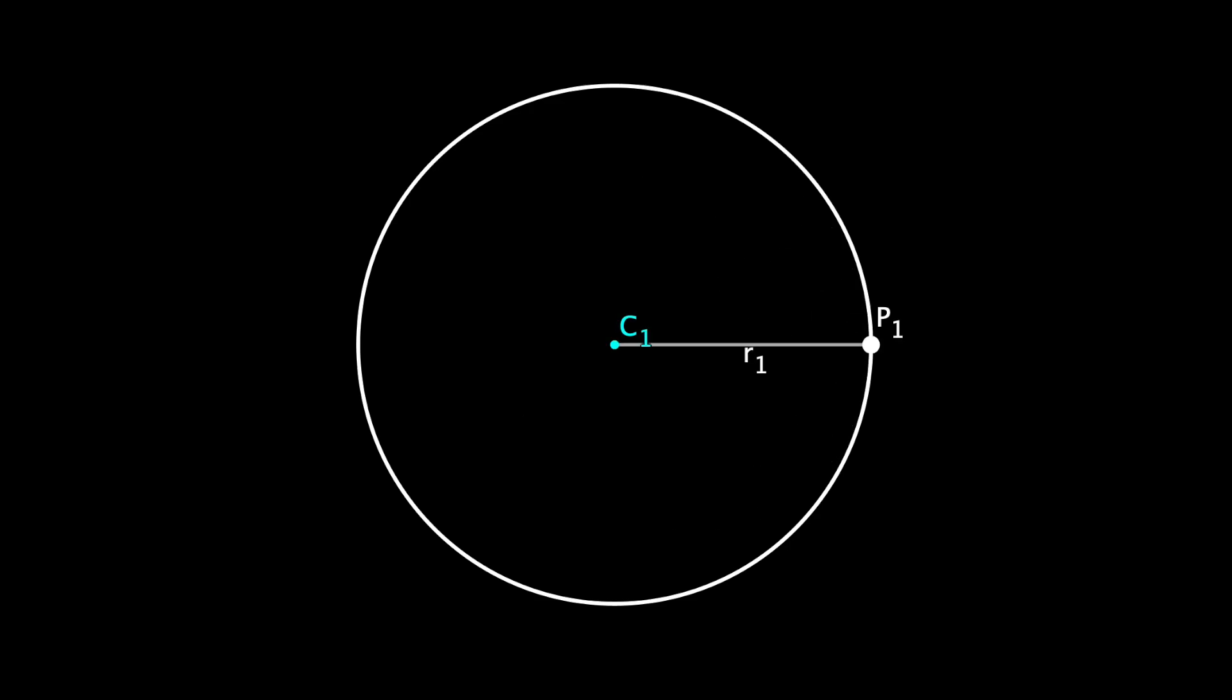To understand what's going on, first let's remove all the circles except for the first one and consider the center c1, the point p1 defining the circle, and the radius r1, the distance of the segment c1 p1.